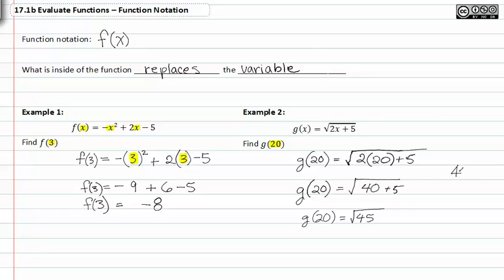Factoring forty five, I get fifteen divide by three and I get five, divide five by five and I get one. So these are my prime factors of forty five, so I can rewrite g of twenty as three root five.